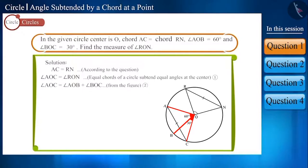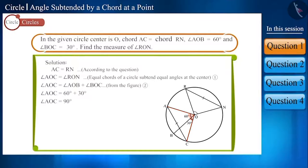So we can write it like this. We are given the measurement of angle AOB as 60 degrees and angle BOC as 30 degrees. By placing their measurements here, we can find the measure of angle AOC, which is 90 degrees. Now, since angles AOC and RON are equal, angle RON will also be 90 degrees.